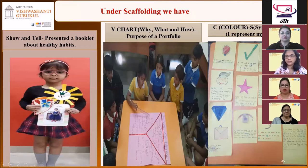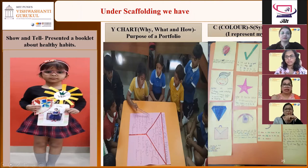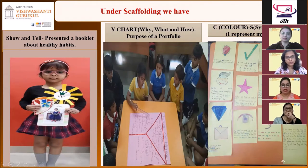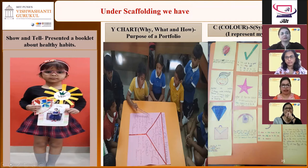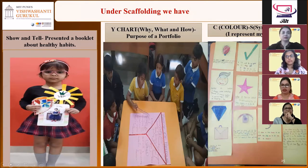Some of the classroom strategies we use are scaffolding — basically breaking up the learning into parts and providing a tool or structure with each part. Under scaffolding, we have show and tell: here the learner created a booklet about healthy habits and presented it to her friend. Use of visual aids, graphic organizers, pictures, and charts can all serve as scaffolding tools. Here we have students working in a group on a Y chart in which they had to find why, how, and what is the purpose of making a portfolio. And in the other picture, students have represented each learner profile with themselves through a visible thinking routine: color, symbol, and image.